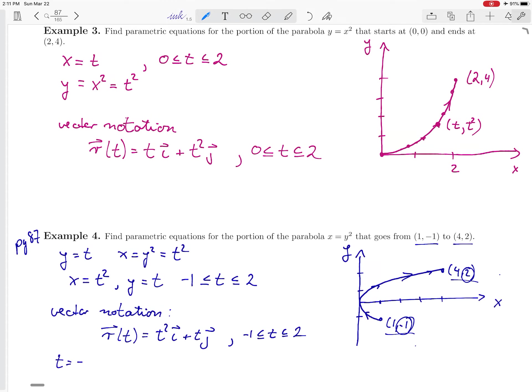And if you wanted to convince yourself, you could double check. You could plug in t equals minus 1 and convince yourself that you start at 1, minus 1 and then plug in t equals 2 and convince yourself that you end up at 4, 2.